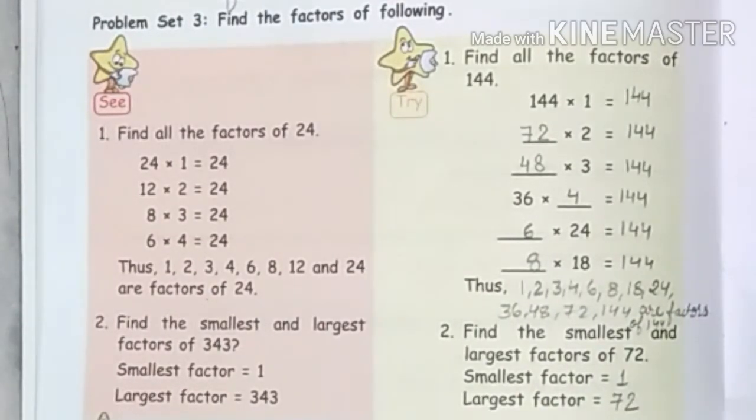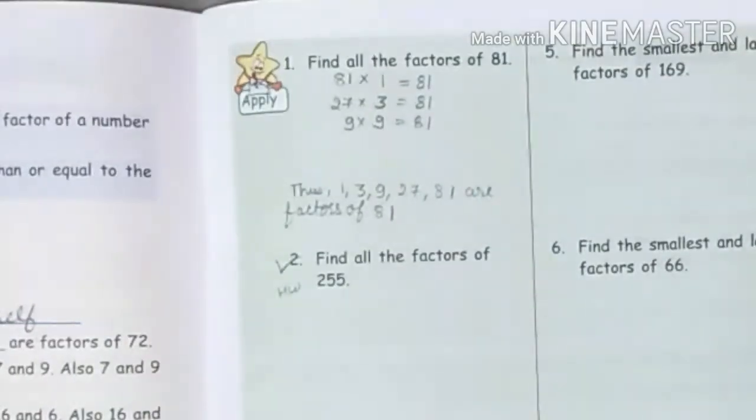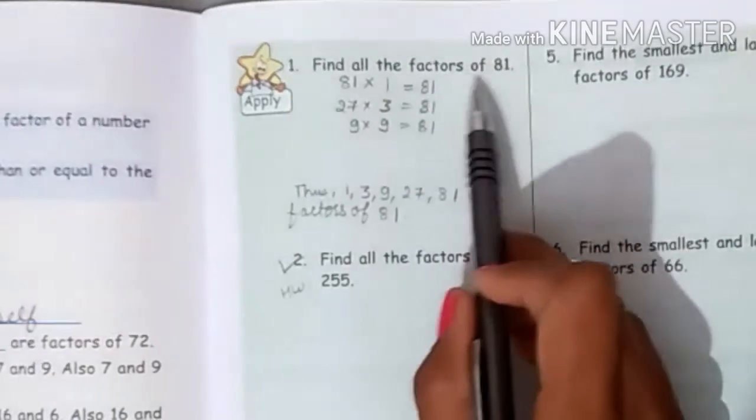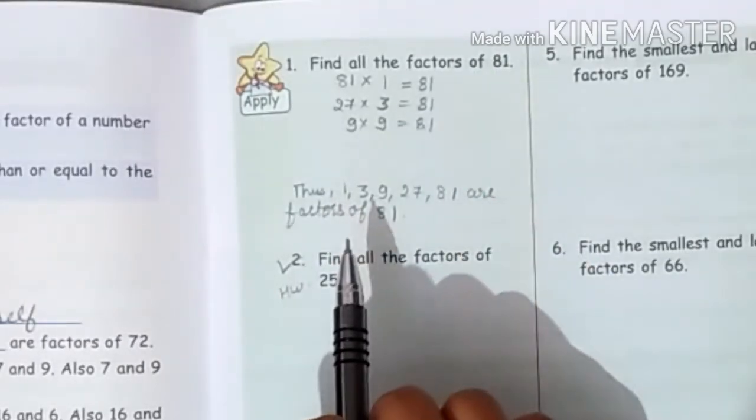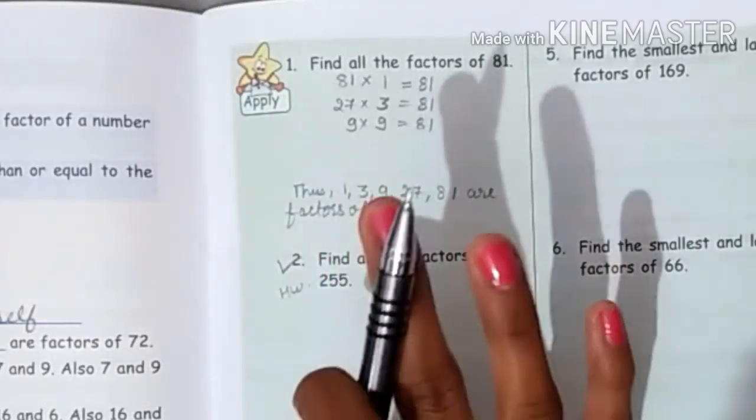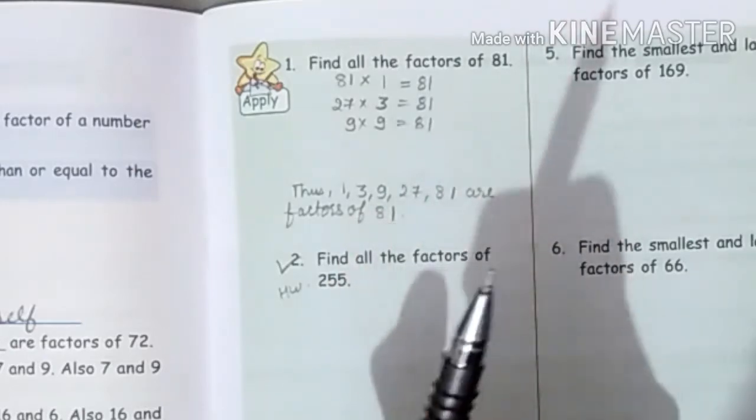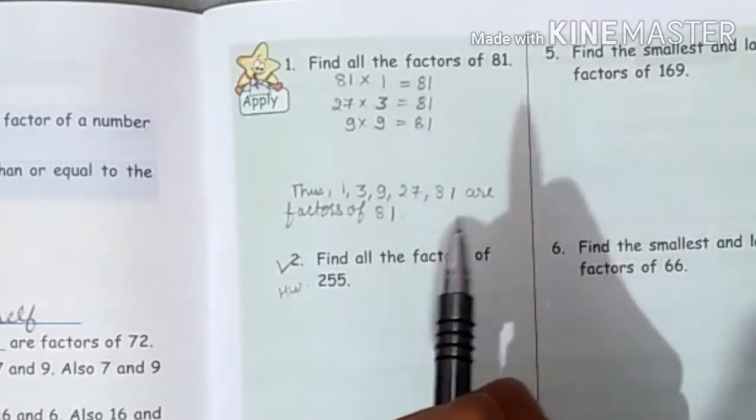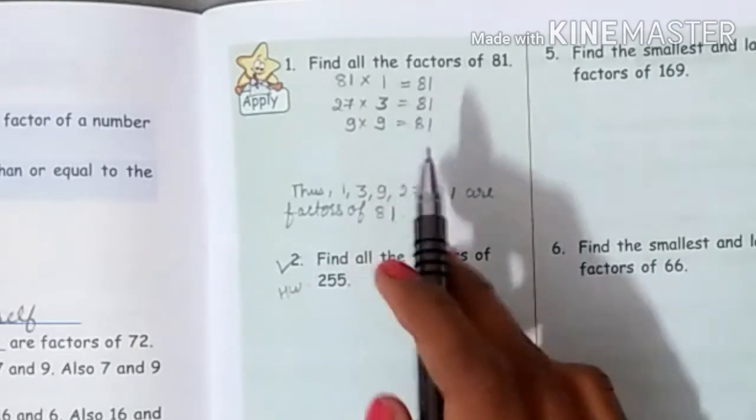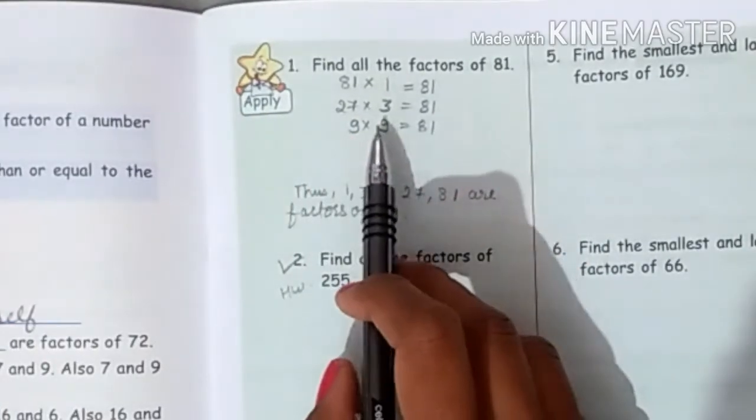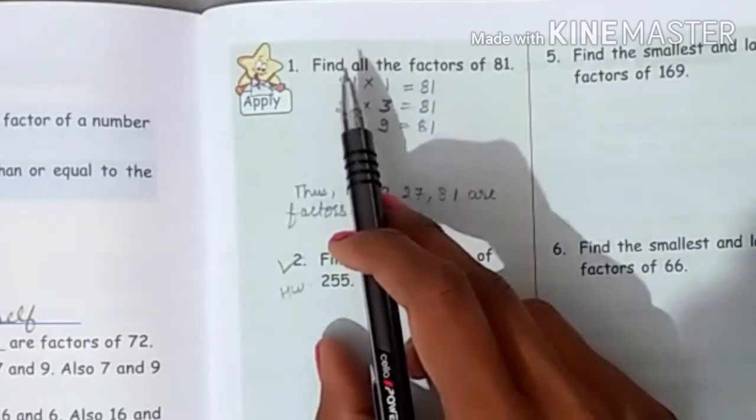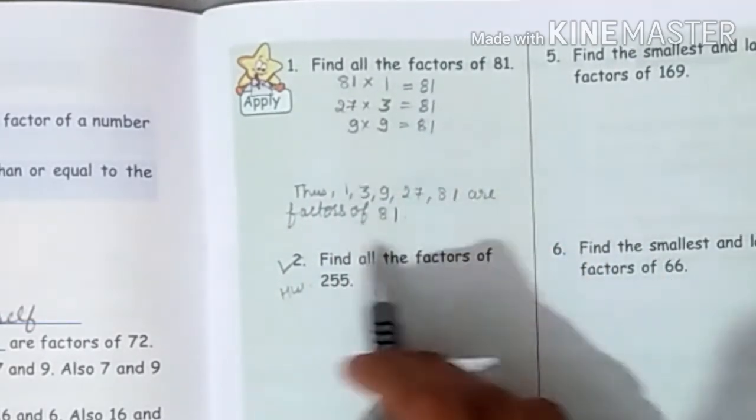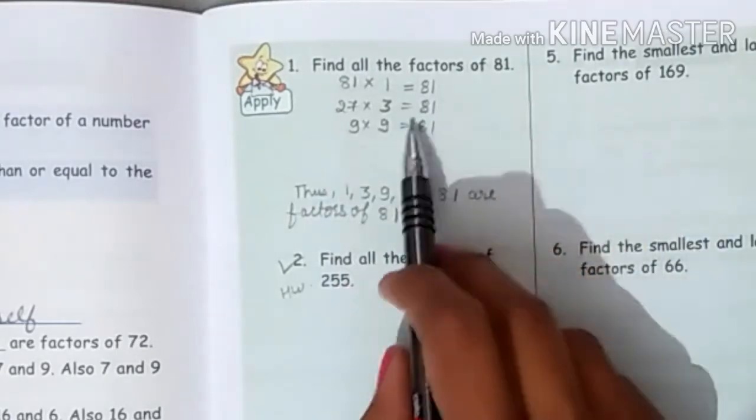Let's do the apply part. Question number 1 of apply part: Find all the factors of 81. Now, 81 comes from one table. It means that 1 and 81 are factors. Nine table comes from 81, and three table also comes from 27 times. So 1, 3, 9, 27, and 81. These are the factors of 81.